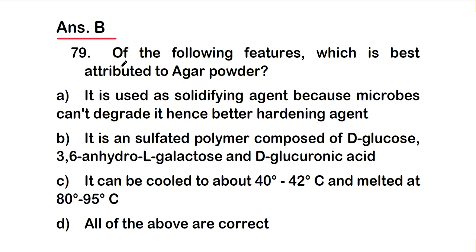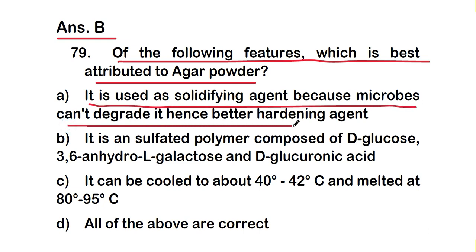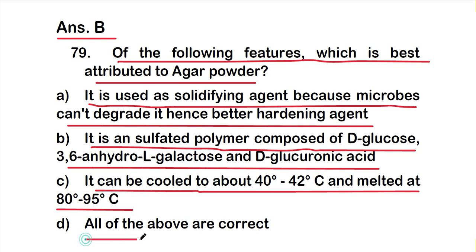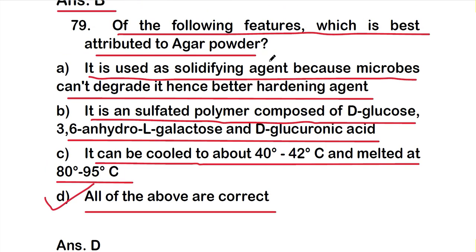Question number 79: Which feature is best attributed to agar powder? Options are: A) used as solidifying agent because microbes can't degrade it, B) it is a sulfated polymer composed of D-glucose, 3,6-anhydro-L-galactose, and D-glucuronic acid, C) it can be cooled to 40–42°C and melts at 80–95°C, D) all of the above are correct. The right answer is option D — all of these characteristics are true about agar powder.